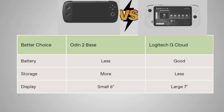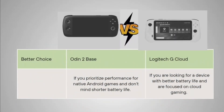Overall, both are good at their own specific things. The Logitech G Cloud is good for those in a cloud gaming environment, and the Auden 2 Base is good for those who want to play retro games as well as newer titles. Battery-wise the Auden 2 gives less backup; storage and brightness are better on the Auden 2 Base, while the Logitech G Cloud has a bigger 7-inch display. If you are prioritizing performance for native Android games and don't mind shorter battery life, go for the Auden 2 Base.